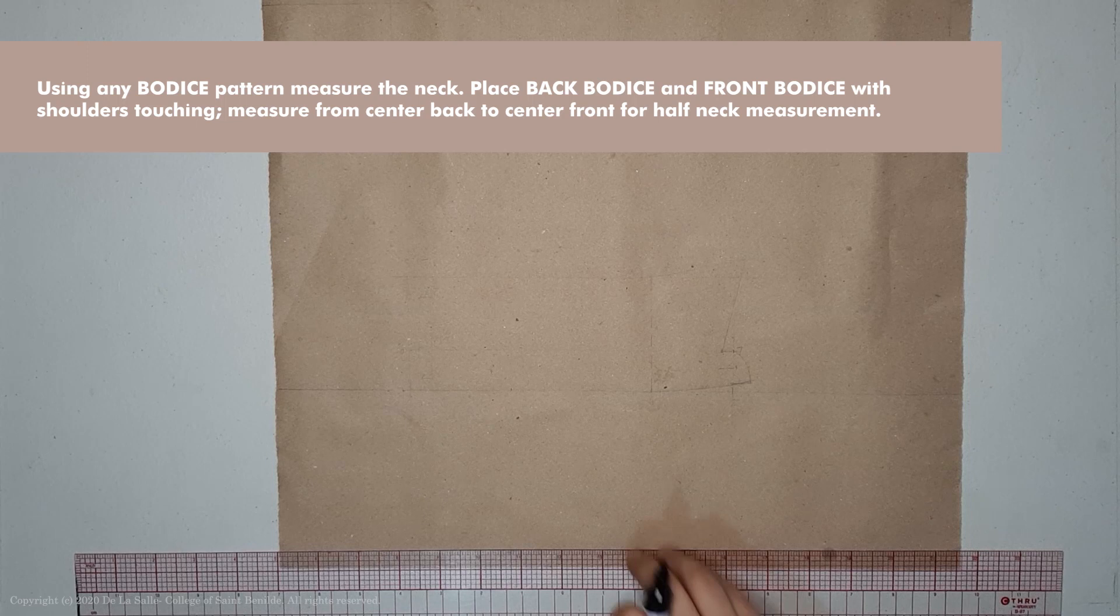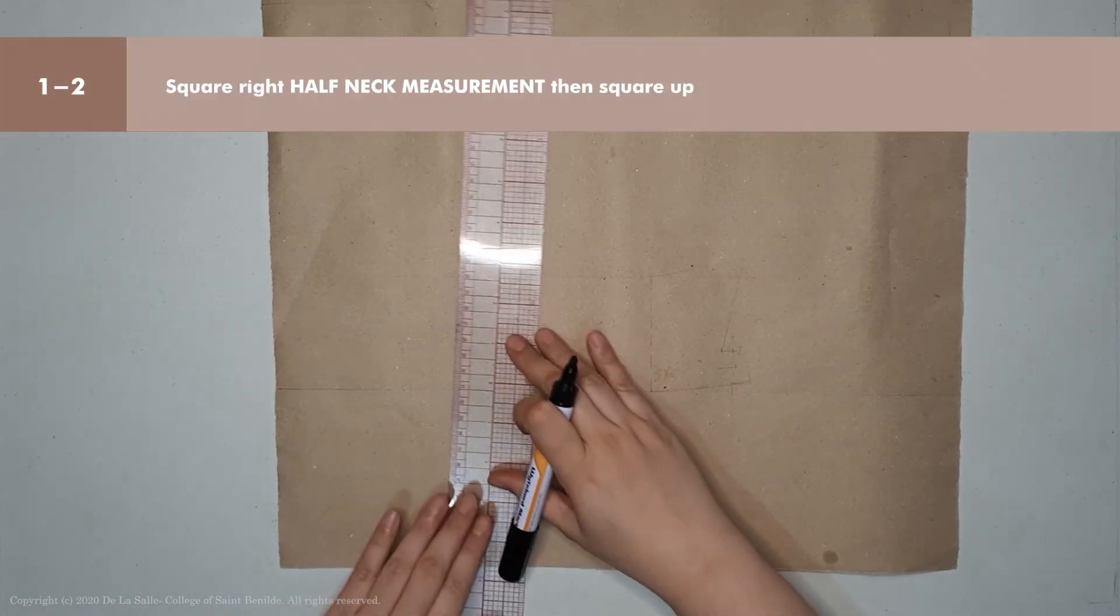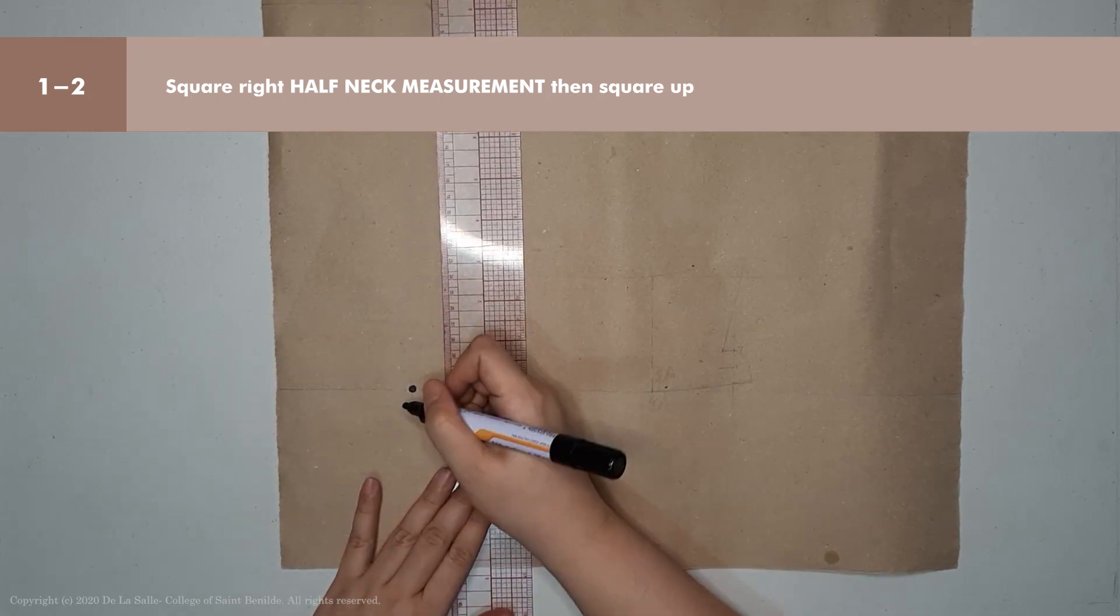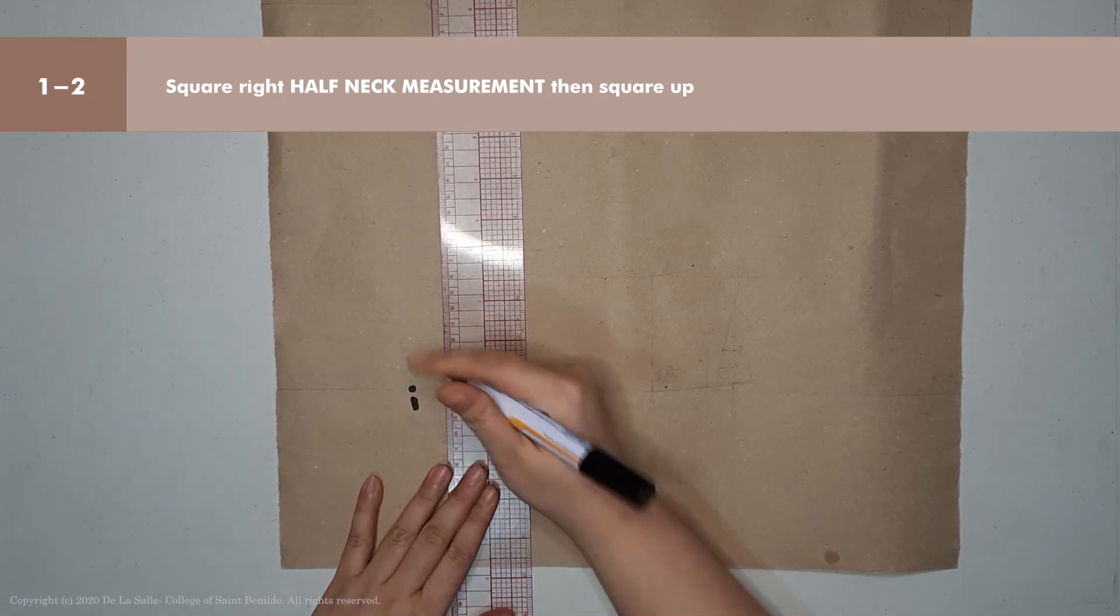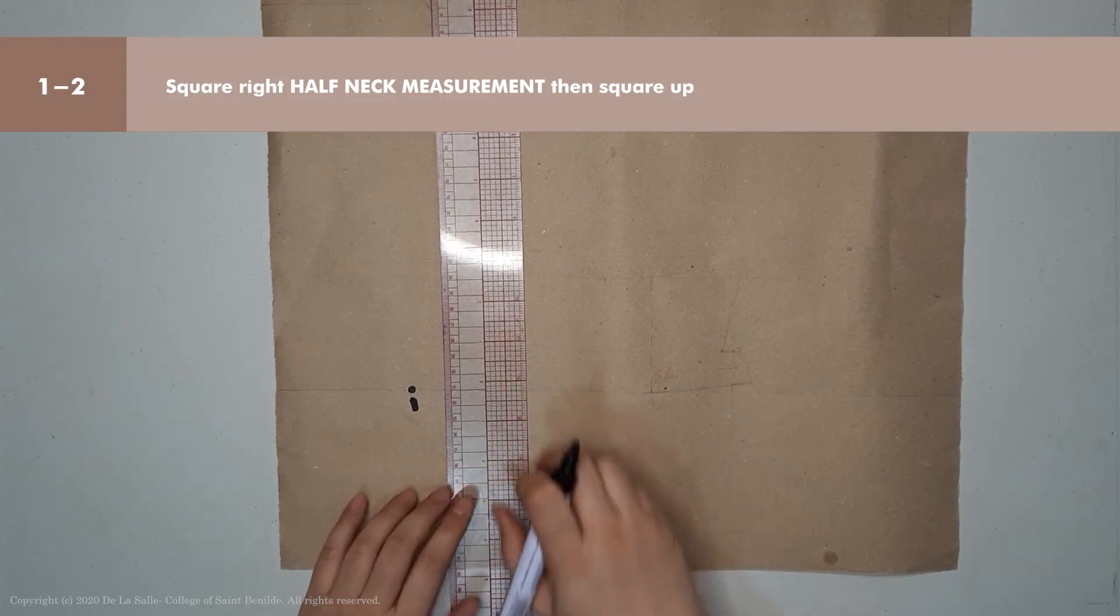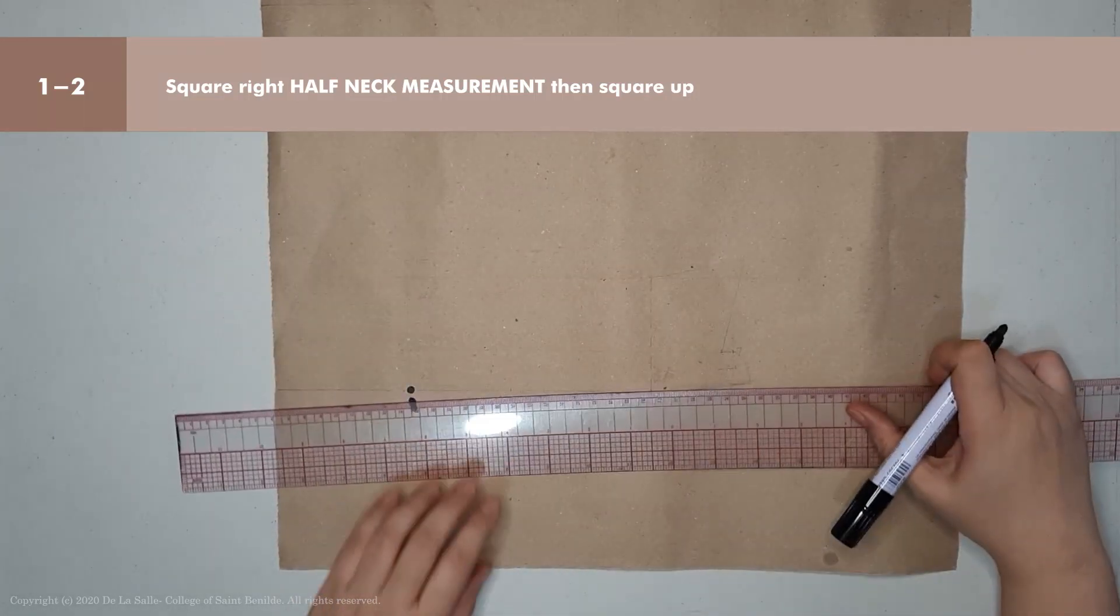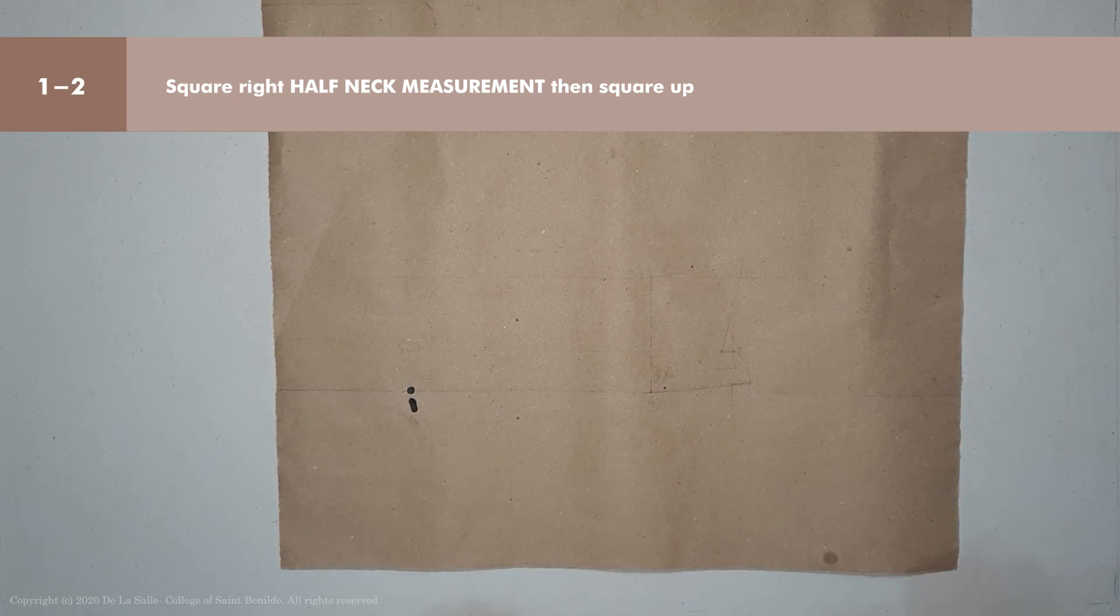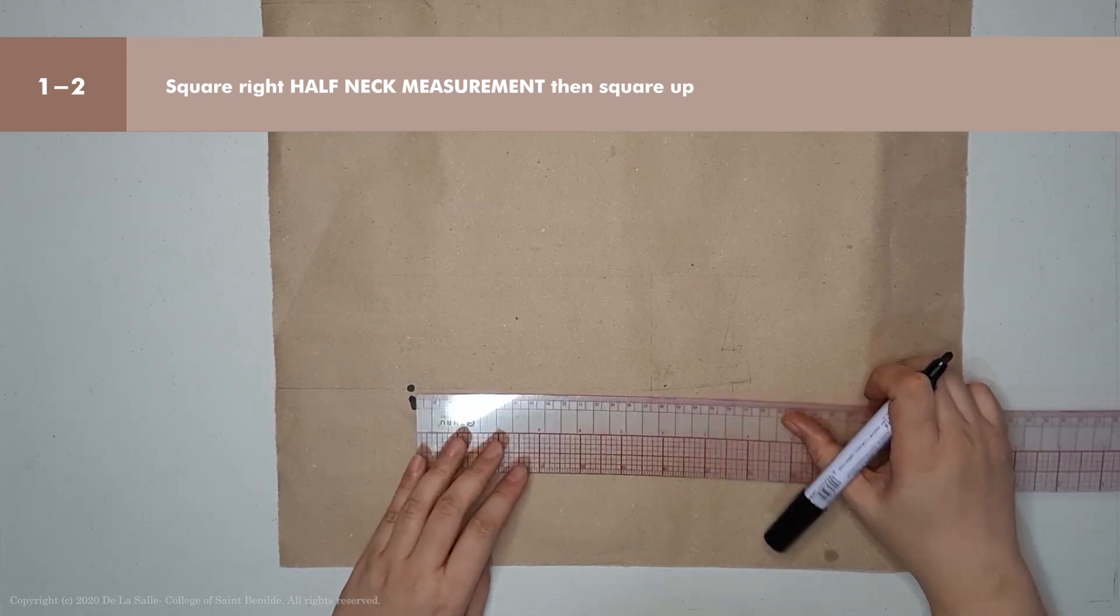First, we're going to start with point 0.1. Point 0.1 is on the lower left, and then square right half neck measurement. The half neck measurement is 19.75.